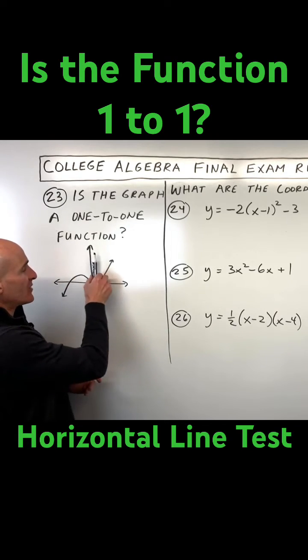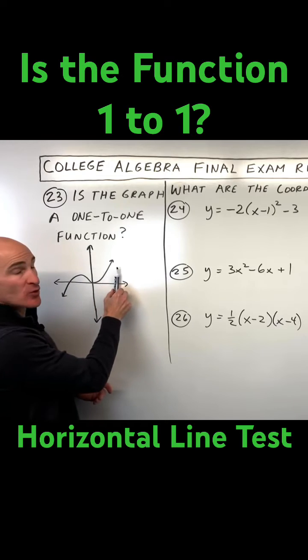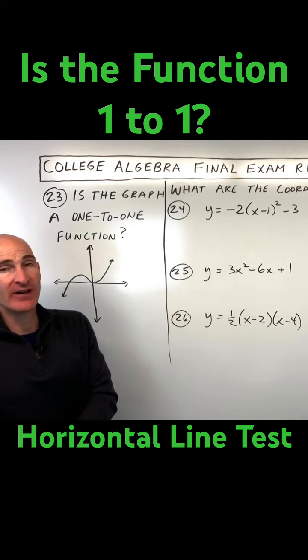When you do the vertical line test, you take a vertical line and you scan across the graph. If it only crosses at most one time, then that means that y is a function of x.